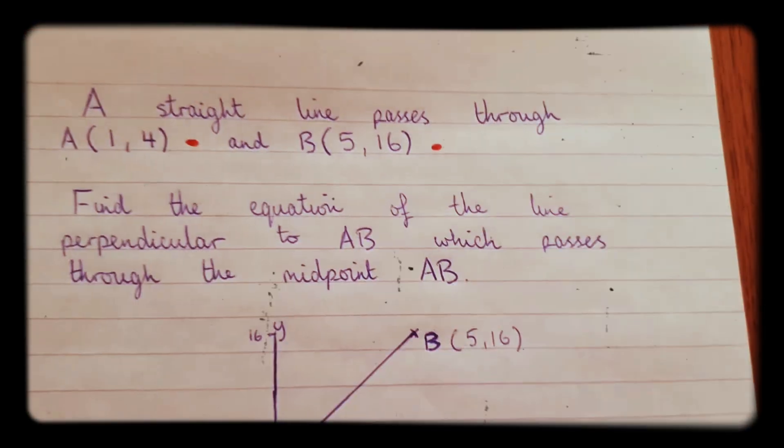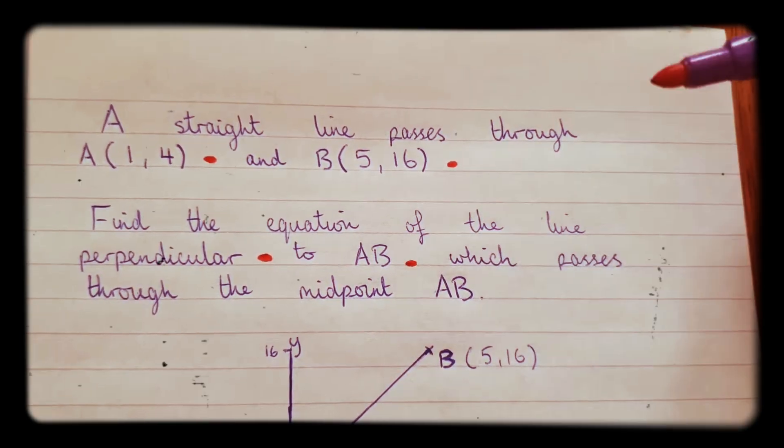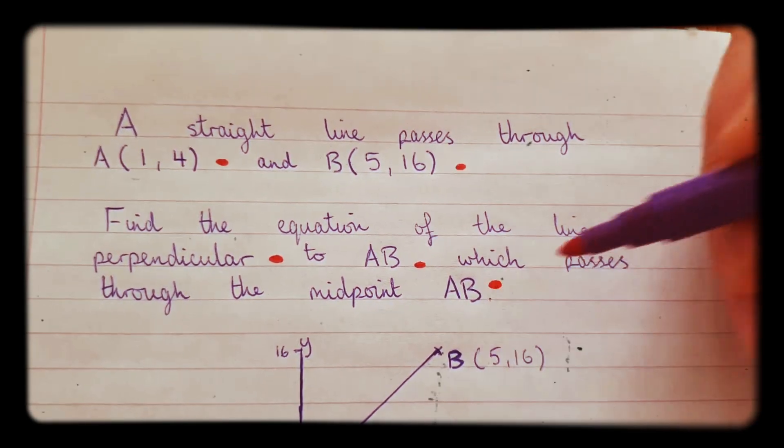Find the equation of the line that's perpendicular to AB and which also passes through the midpoint of AB.